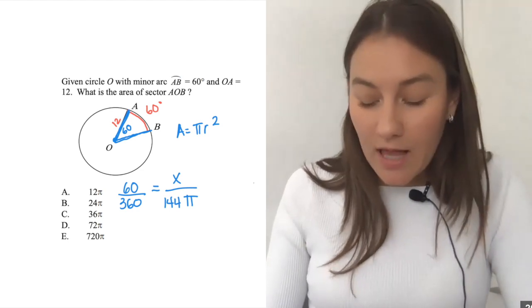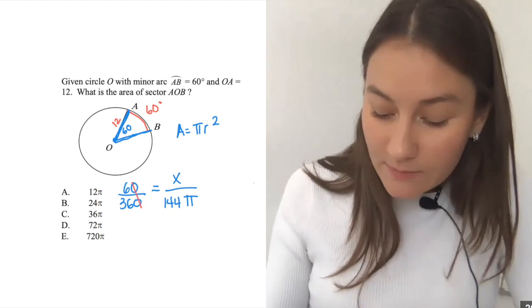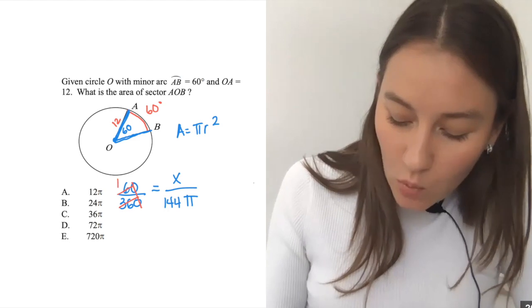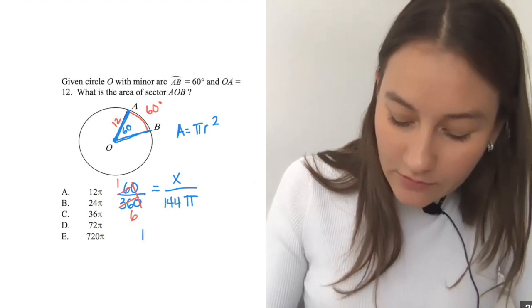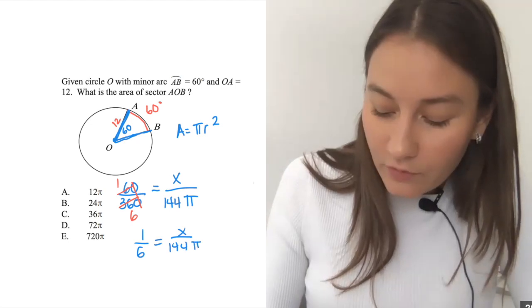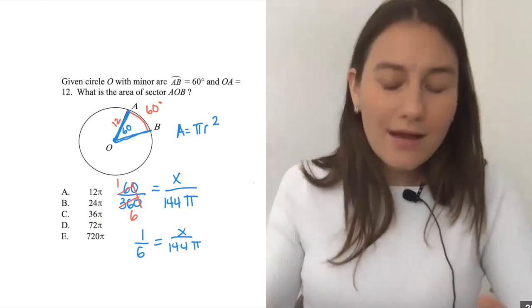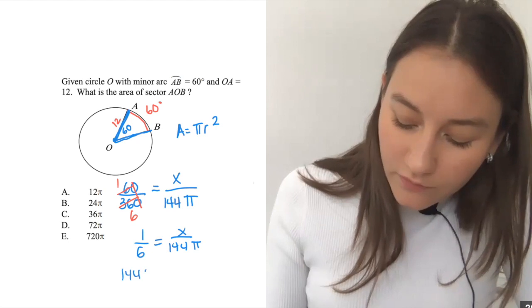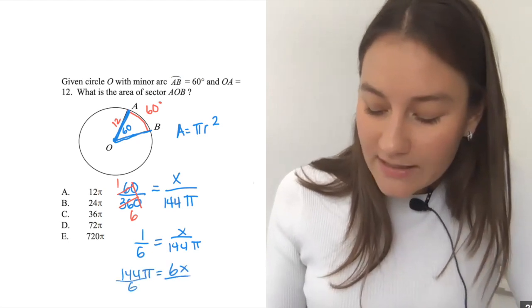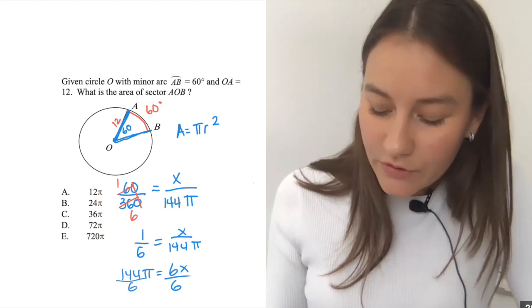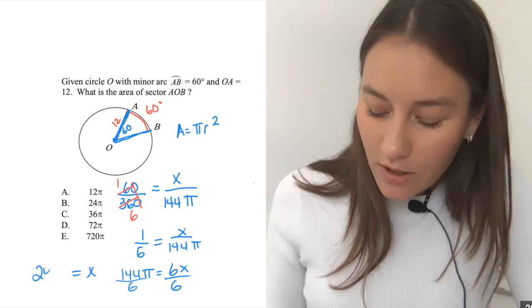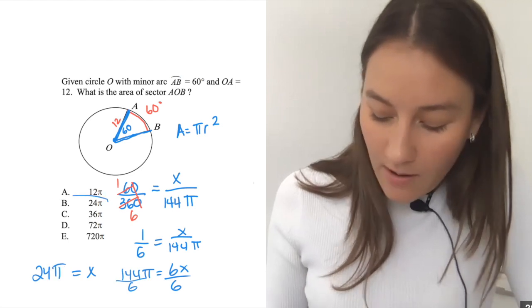And now we can just cross multiply. So if we cross multiply, I'm actually going to simplify first to make this look a little bit neater. So I get 1 sixth, right? Six goes into 36 six times. 1 sixth is equal to X over 144 pi. That just looks a little neater to me. Now I'm going to cross multiply. I get 144 pi is equal to 6X. I'm going to divide both sides by six and I get X is equal to, well, six goes into 144, 24 times. My answer is 24 pi.